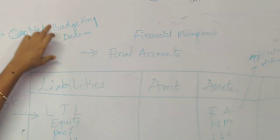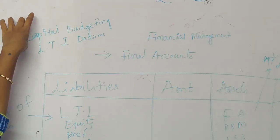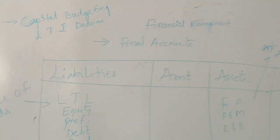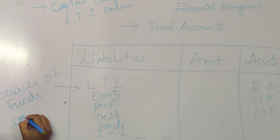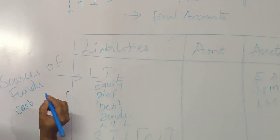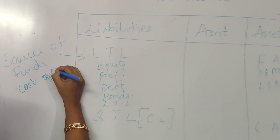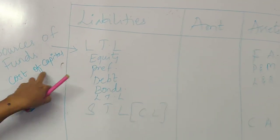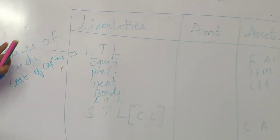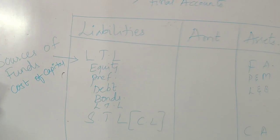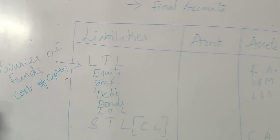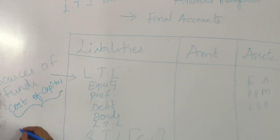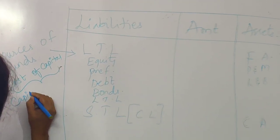In fixed assets, whatever you are applying there, we are going to learn it as long-term investment decision making or capital budgeting. From wherever we are sourcing our funds, we have two concepts in mind: one is cost of capital — what is the cost that we are going to incur whenever we source these funds — and another one is capital structure.